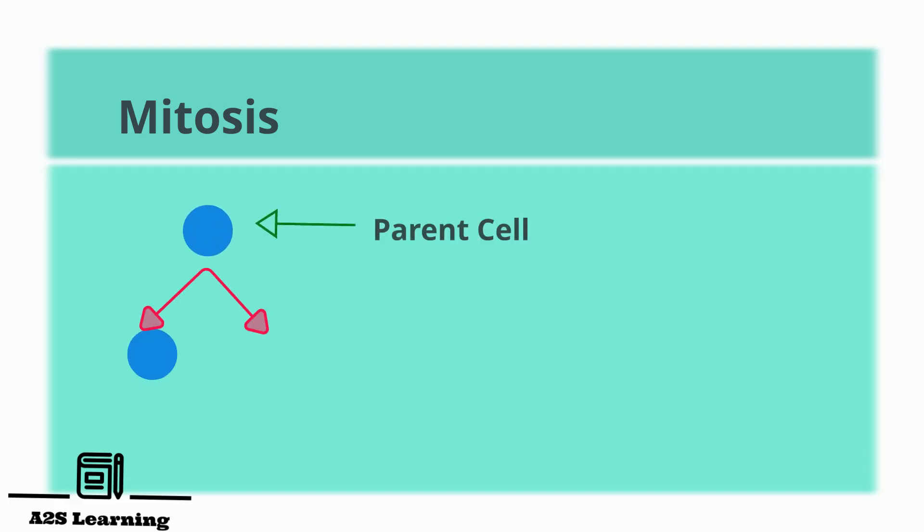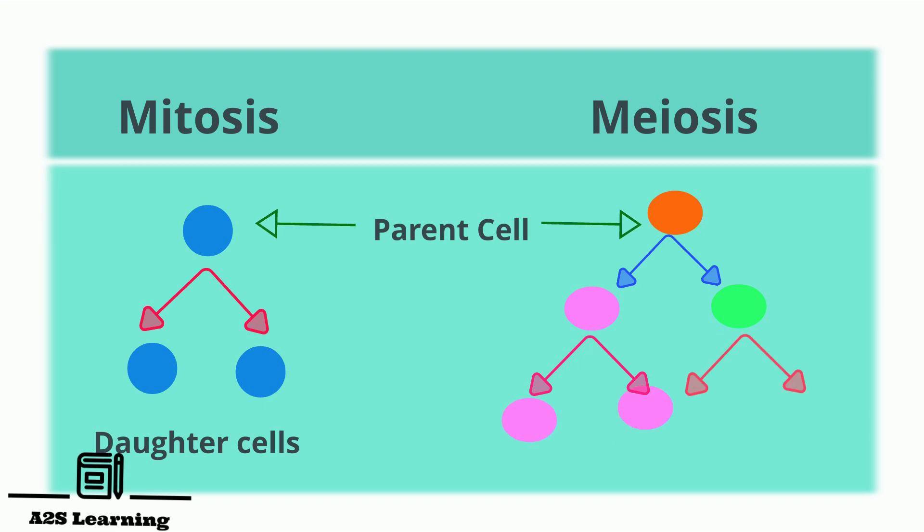Mitosis is the single-step division in which two identical daughter cells are produced. Meiosis is the two-step division in which genetically different four daughter cells are produced.